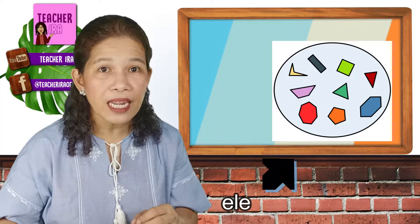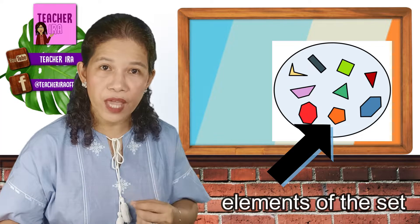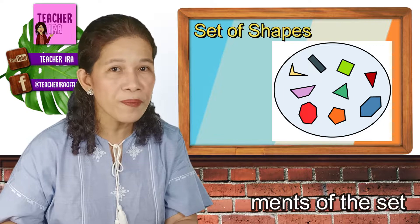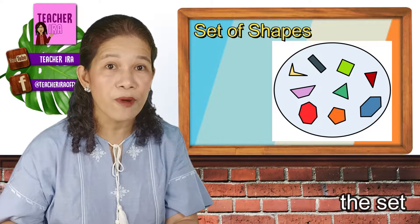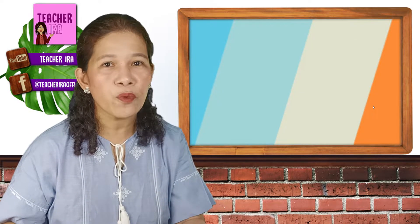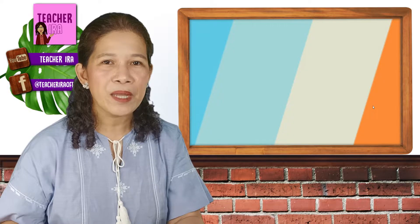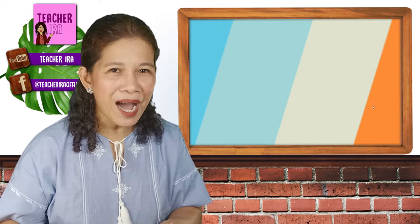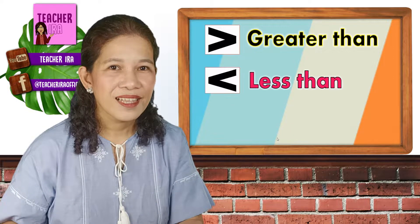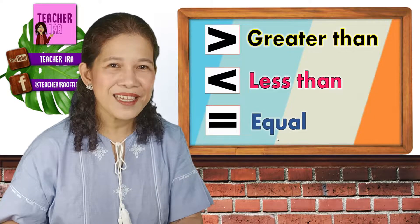Set is also called group, and we had also defined elements. Elements are the objects or the things that are inside the group. That also determines the name of the set. There are different ways on how we could compare them. But today, we will learn about greater than, less than, and equal.